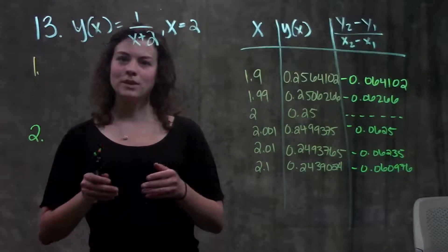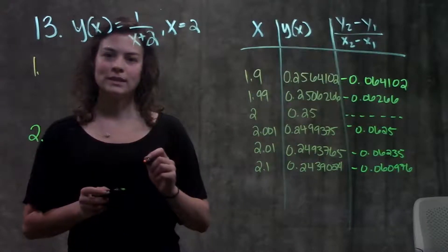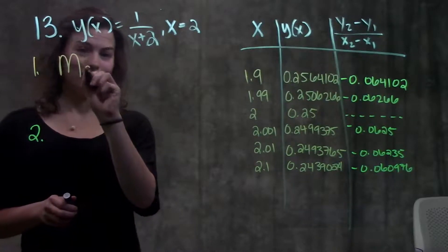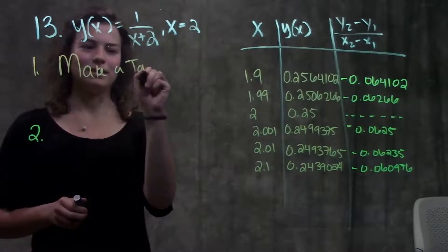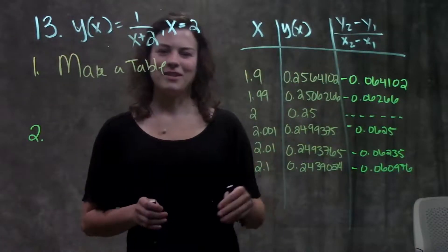All right, so let's go through this problem. I already have a table populated over here, but we're going to go through each step of how I got this table. So step one is make a table and we already have one right here, but let's go through how I got this table.